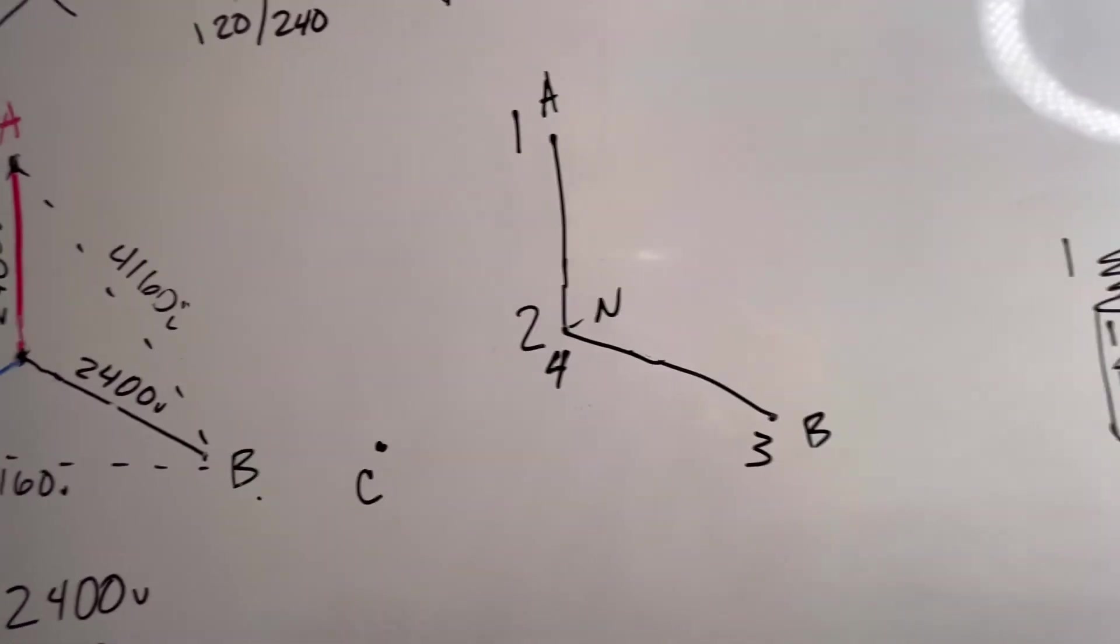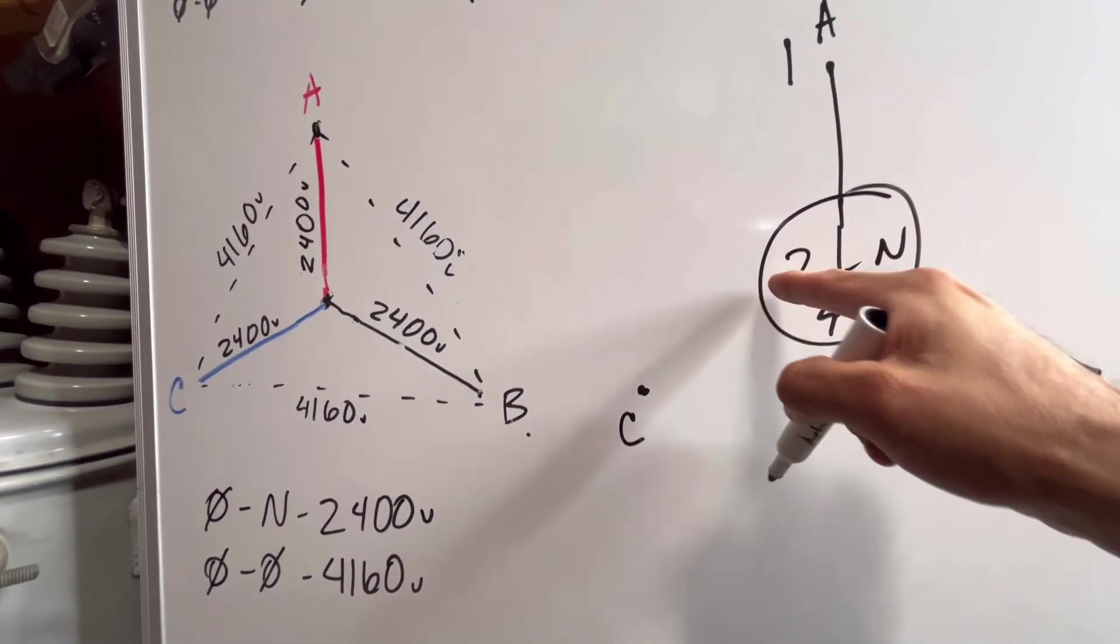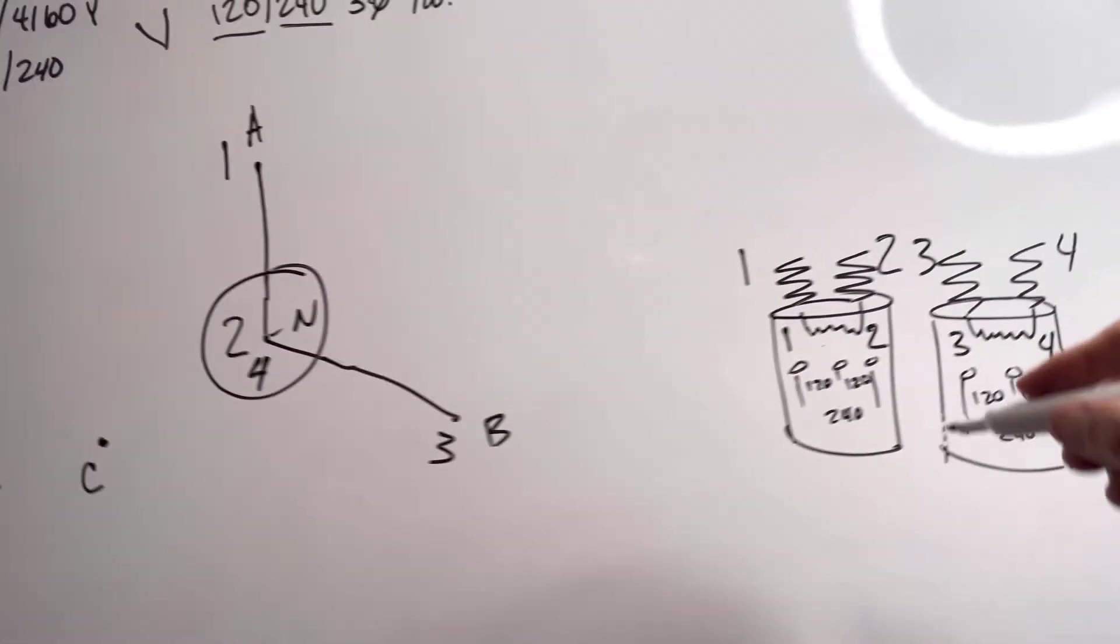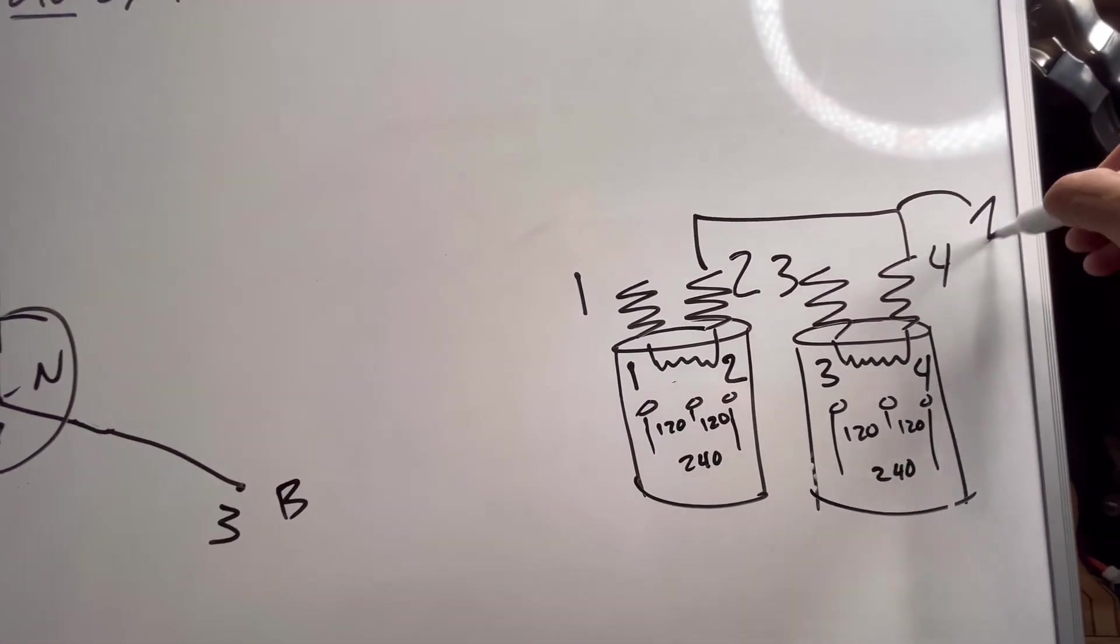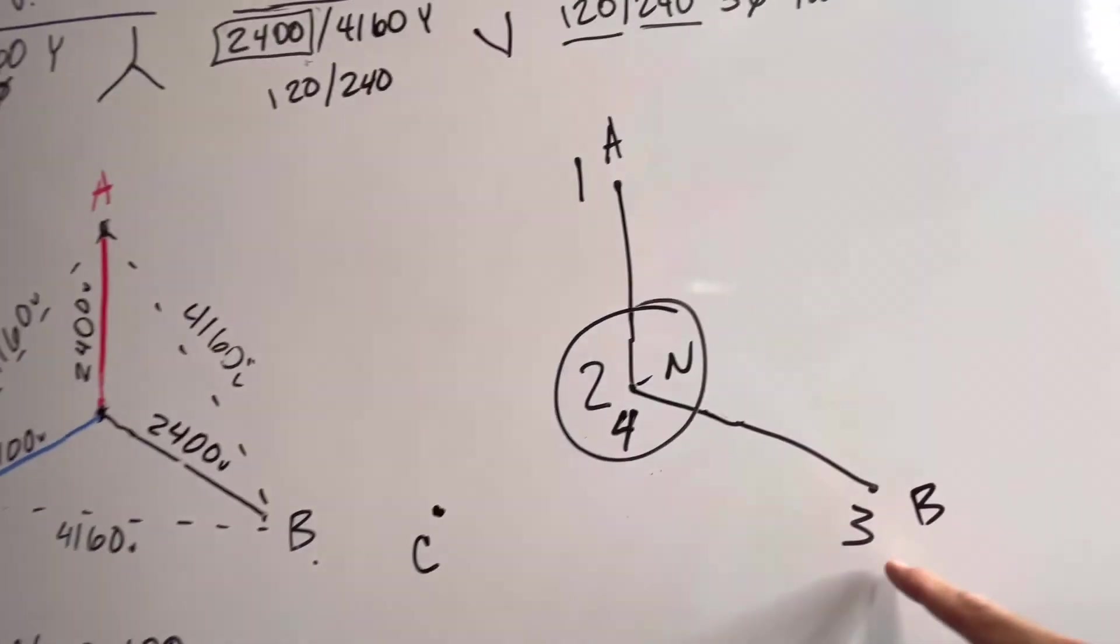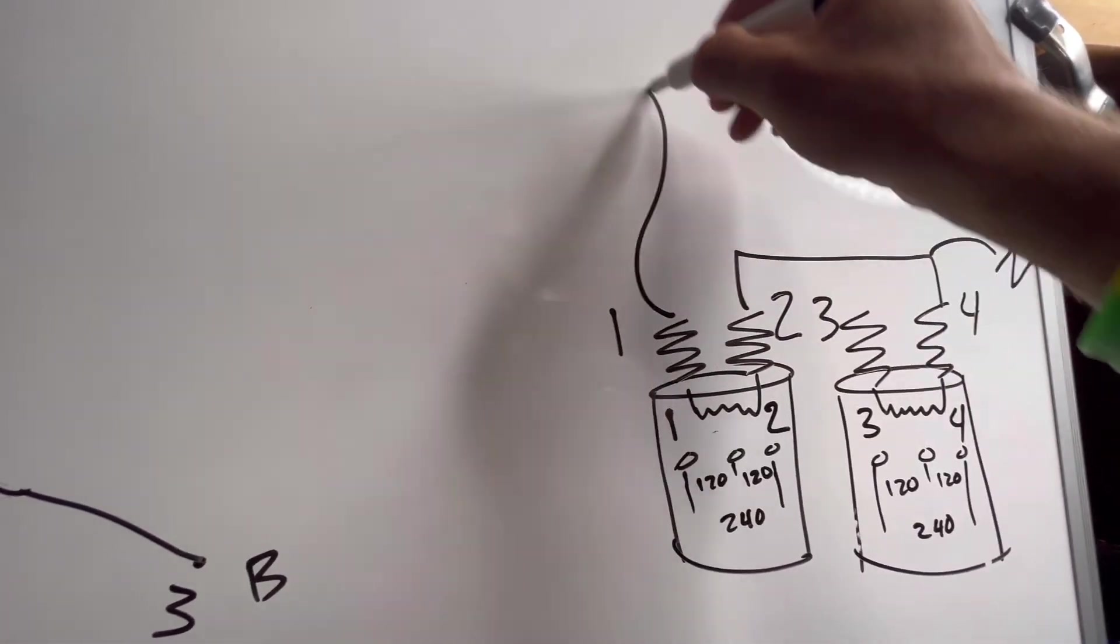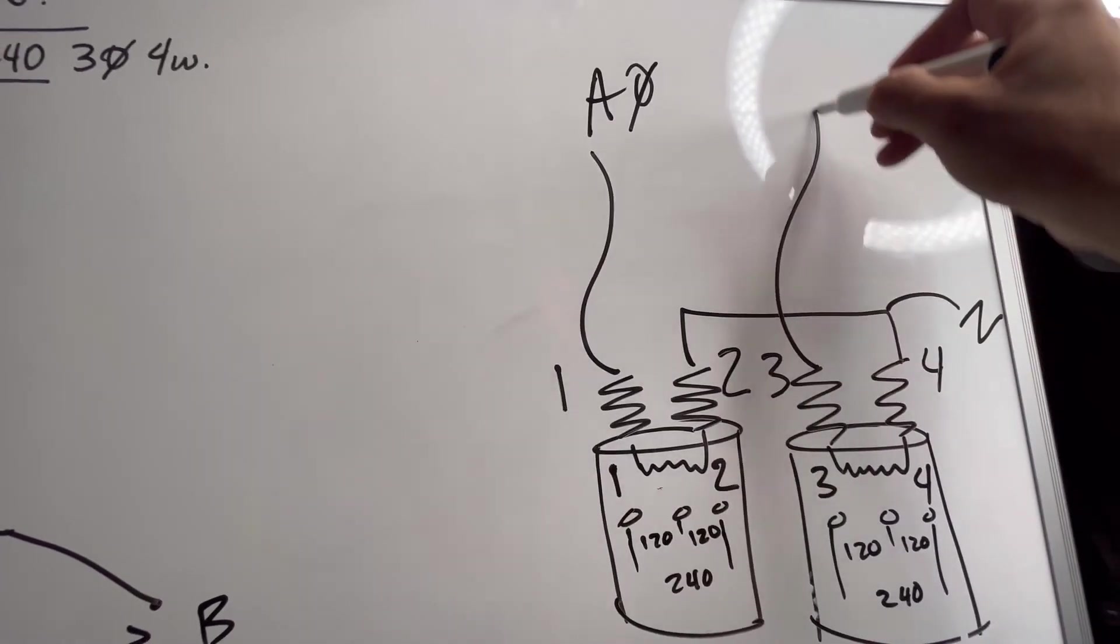So the next step is to hook it up. If we look at our primary vector, our two and four tie together and go to our circuit neutral. So two and four tie together, go to our circuit neutral. One goes to A, three goes to B.